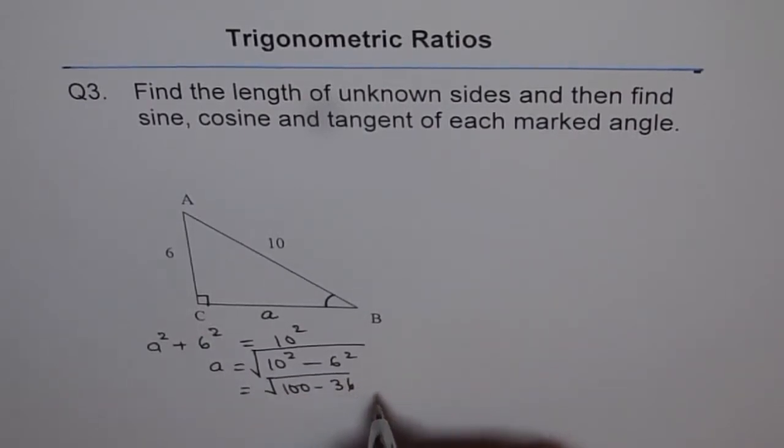You can use the calculator to figure out the answer. 100 minus 36 is 64. This is the square root of 64, which is 8. So we have side A as 8.